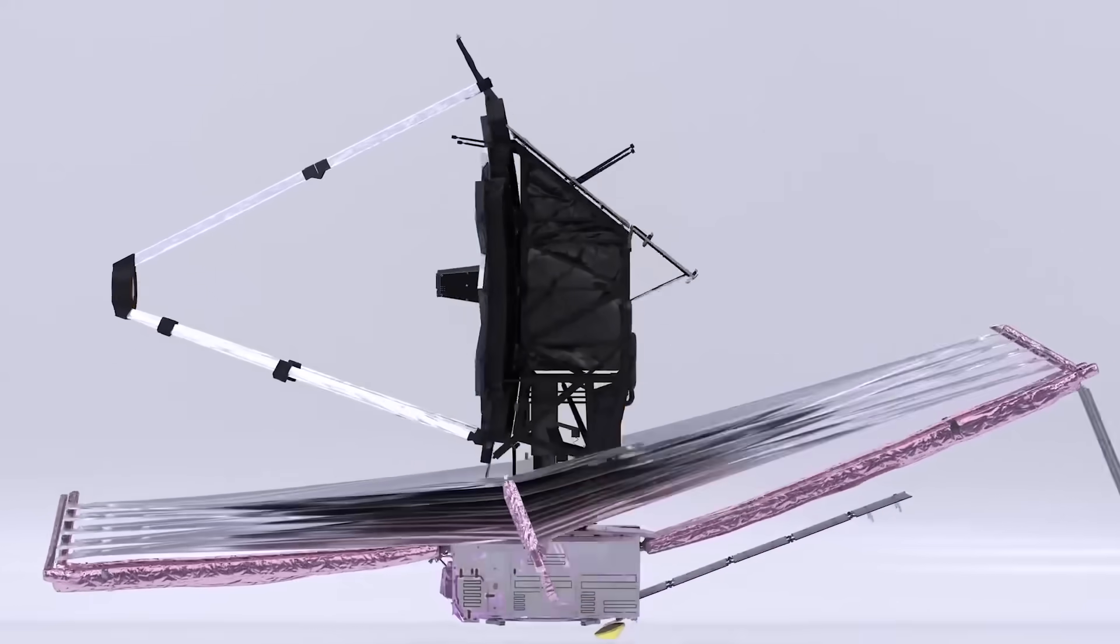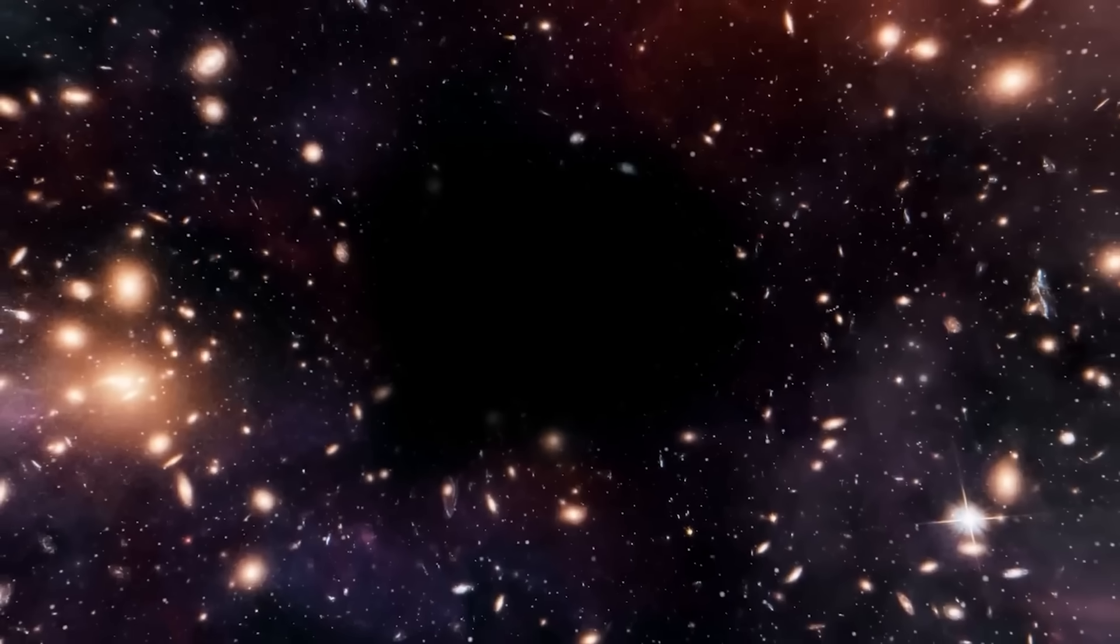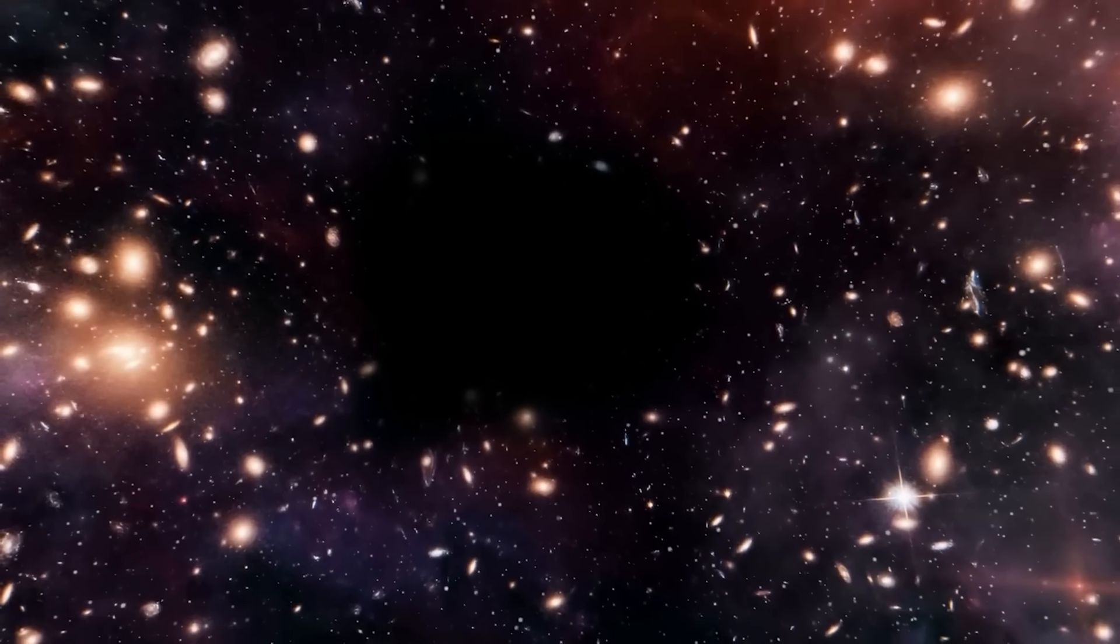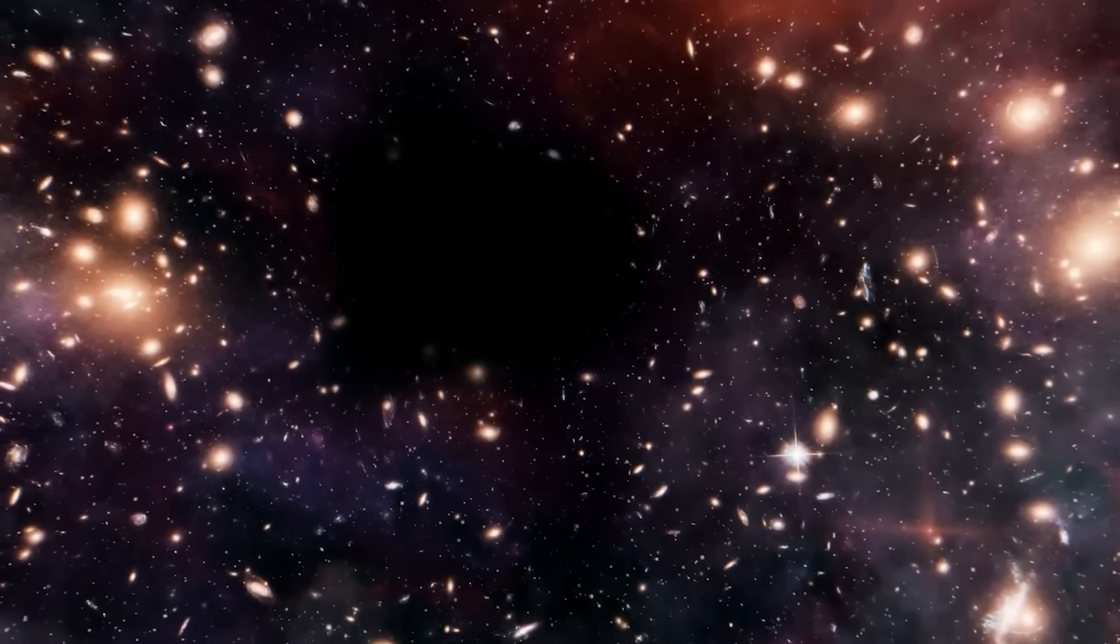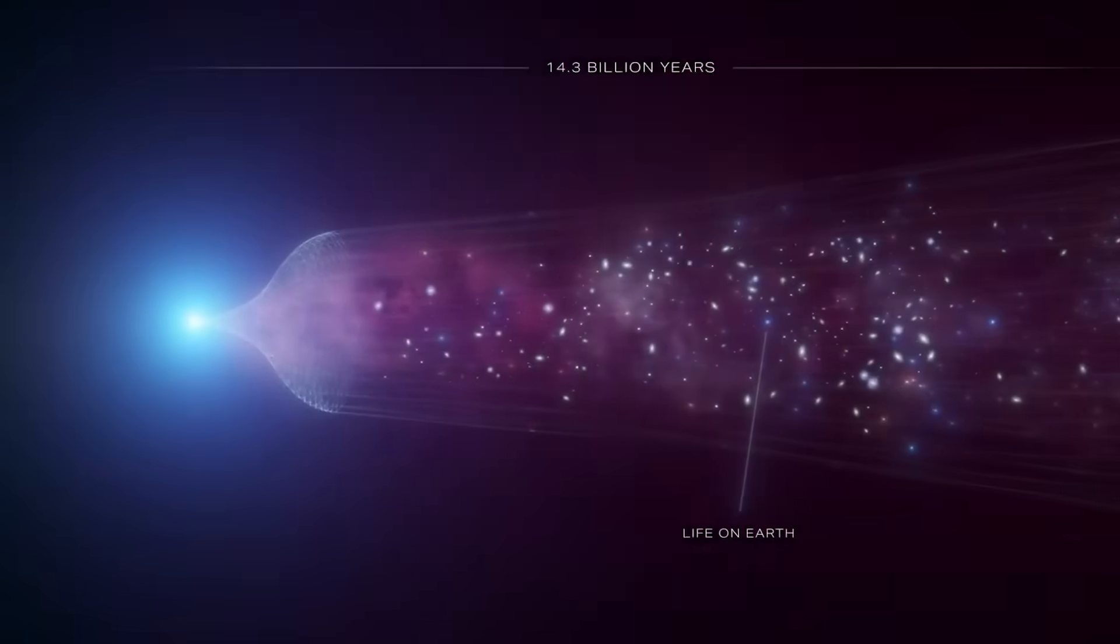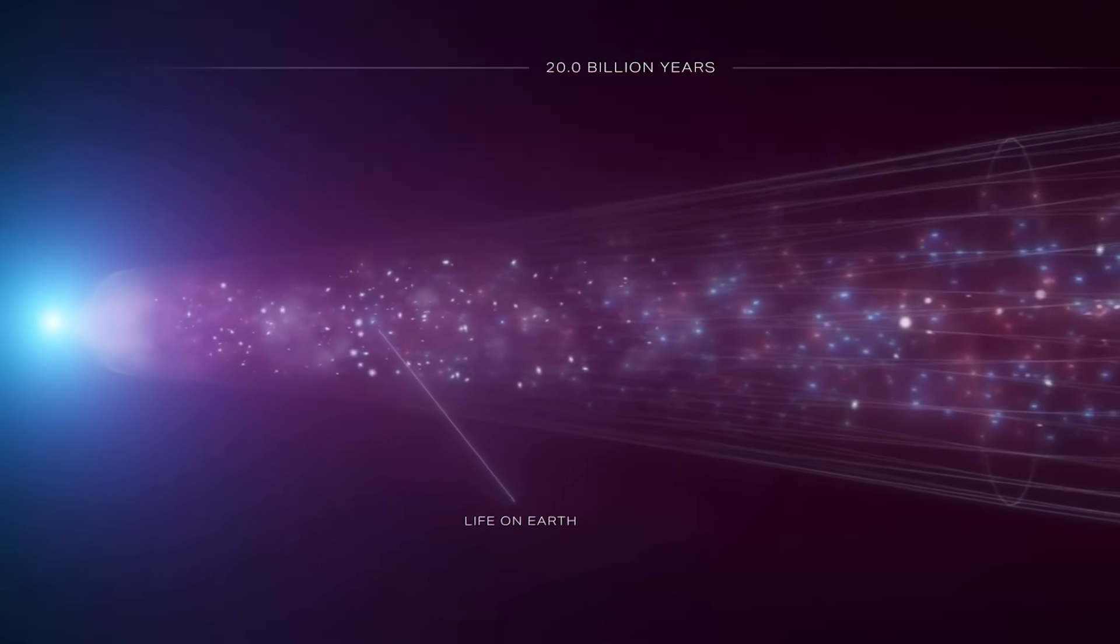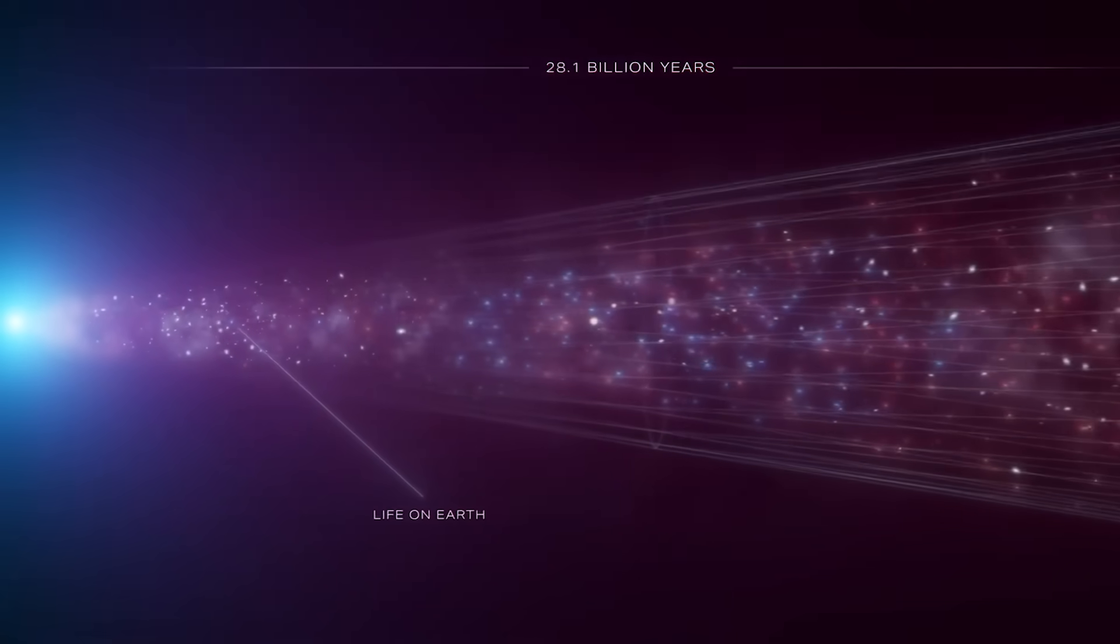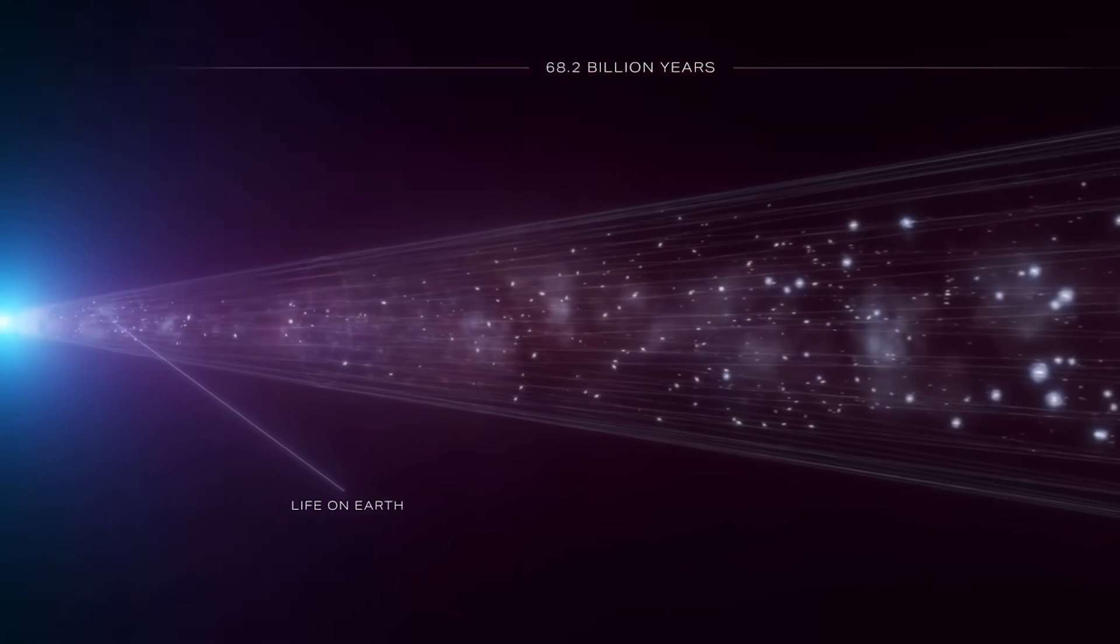Another fascinating aspect of the James Webb Space Telescope's mission was its ability to peer back in time, thanks to its observations of light that had traveled for billions of years across the vast expanse of space. By studying the earliest light in the universe, scientists could gain a better understanding of the conditions that existed shortly after the Big Bang, shedding light on the origins of our cosmic home.